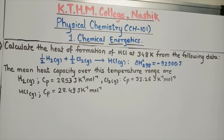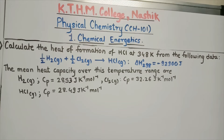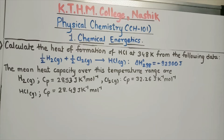The next numerical: calculate the heat of formation of HCl at 348 K from the following data. Half H₂ gas plus half Cl₂ gas gives 1 mole of HCl, and delta H at 298 K equals minus 92,300 joule. The mean heat capacities over this temperature range are: Cp of H₂ = 28.53, Cp of Cl₂ = 32.26, and Cp of HCl = 28.49 joule per Kelvin per mole.